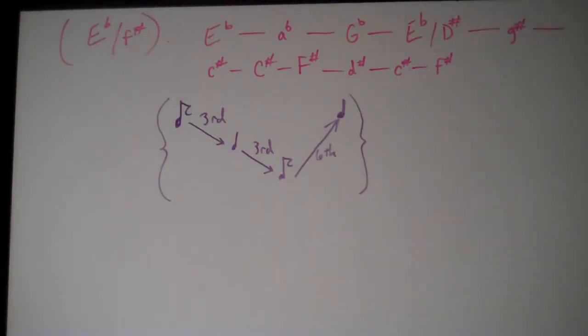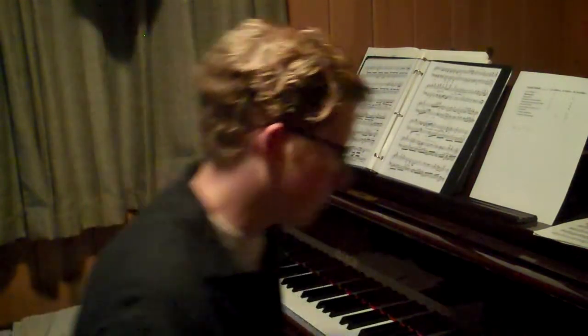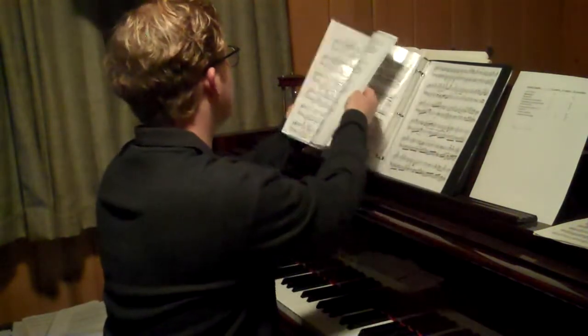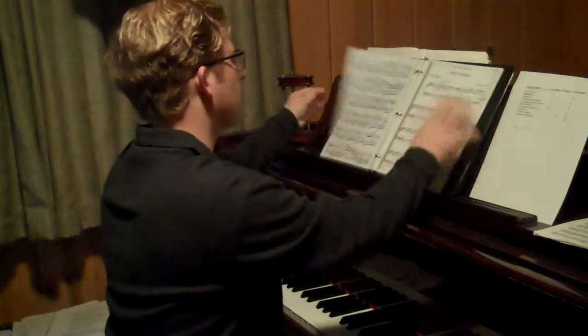Now we'll look at a chromatic sequence in Chopin's first mazurka, his Opus 6, the Mazurka in F-sharp minor. He uses a chromatic progression — temporarily going into E major, then A major. In order to get back to the relative minor of A major, he uses a chromatic progression in a descending pattern.